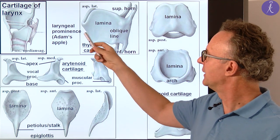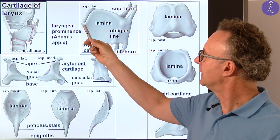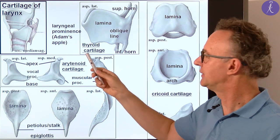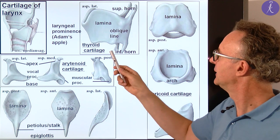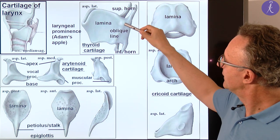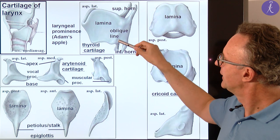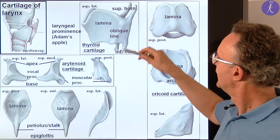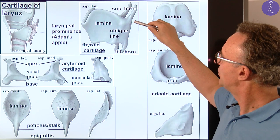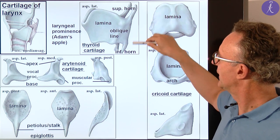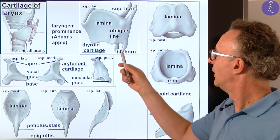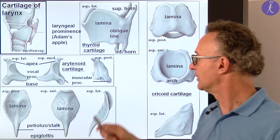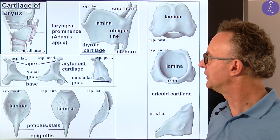To describe the details I'd like to start with the thyroid cartilage first. It has two laminae which unite in the midline at the laryngeal prominence, also called Adam's apple. It's a good landmark for orientation. There is a small oblique elevation called the oblique line. In front and behind we have muscle insertions, and at the end we have two pairs of processes — superior and inferior horns. On the inferior horn medially we have a small articular surface for the cricoid cartilage.